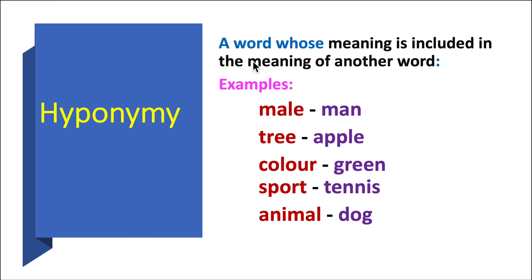Hyponymy: a word whose meaning is included in the meaning of another word. Examples: male/man — the meaning of the word man is included in the concept of male. Likewise: tree/apple, color/green, sport/tennis, animal/dog. What we find is that the meaning of a specific word is reflected within the meaning of another, broader word.